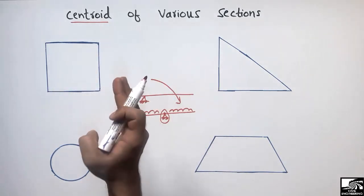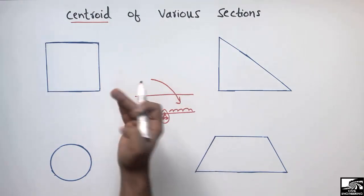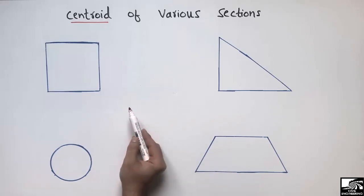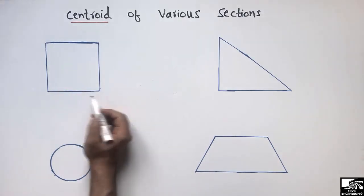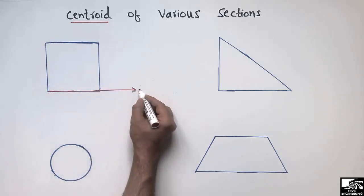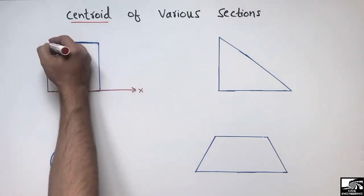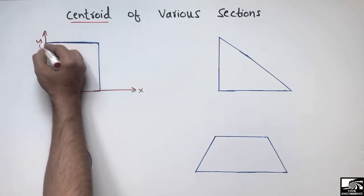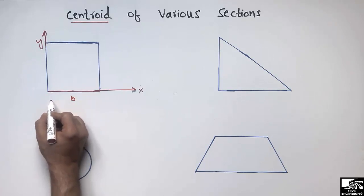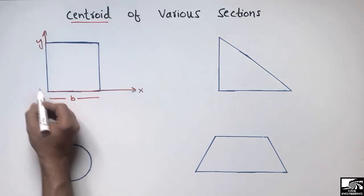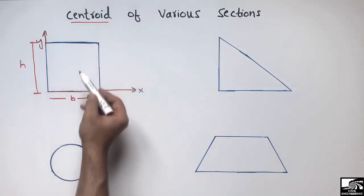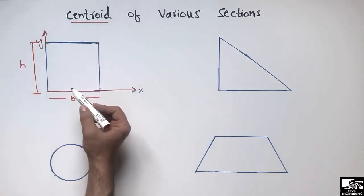The centroid is the point at which the whole mass of a geometric object acts. Now I want to find the centroid of various sections, starting with the rectangle. This is the rectangle, and I'll draw its x-axis and y-axis. Let's say the width of the rectangle is B and the height is H.